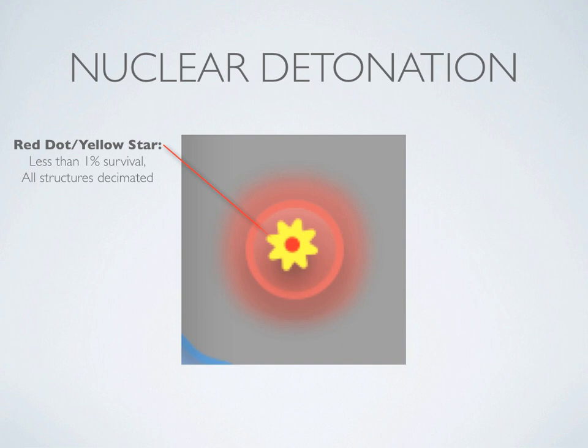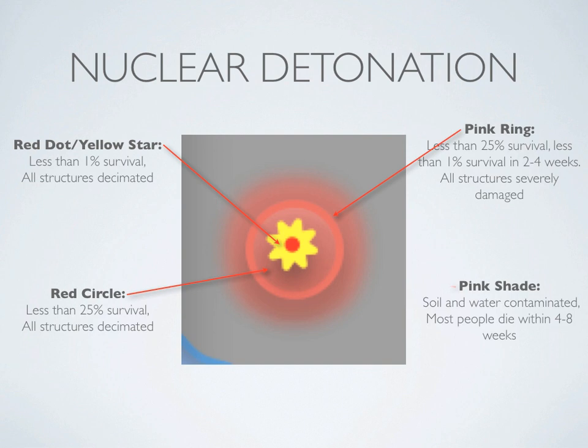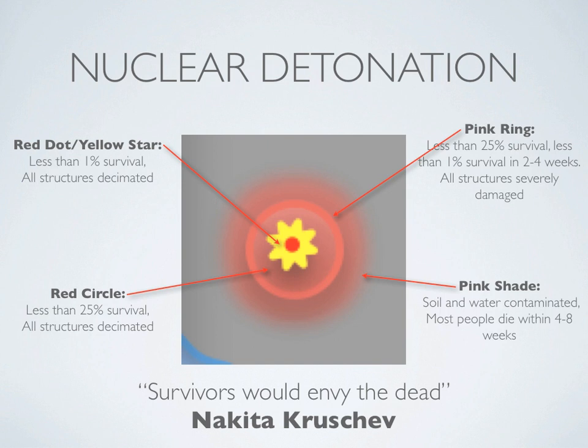In a nuclear detonation, most will be air bursts — when a nuclear bomb explodes high above the city, creating far more damage than if it blew up on the ground. The red dot and yellow star represent an area with less than 1% survival and all buildings decimated. The red circle outside sees less than 25% survival with almost all structures decimated. The pink ring has less than 25% survival and less than 1% survival at 2–4 weeks out. The pink shade would see water and soil contaminated; most survivors would die within 4–8 weeks. As Soviet leader Nikita Khrushchev said, 'the survivors would envy the dead.'